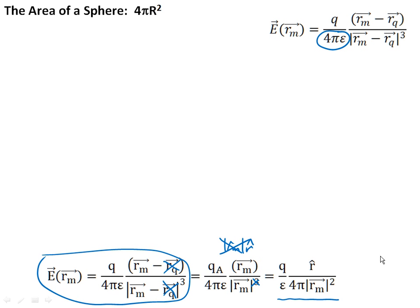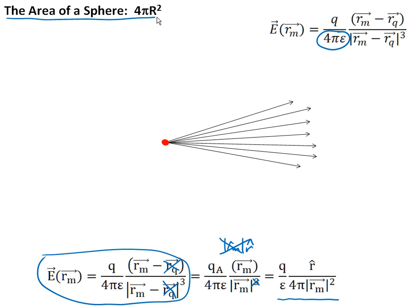So we see essentially that we have a term in the denominator that's 4πr². It turns out that the area of the sphere is also 4πr², and this isn't a coincidence at all.